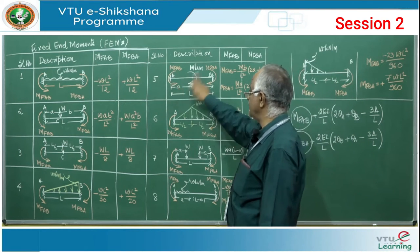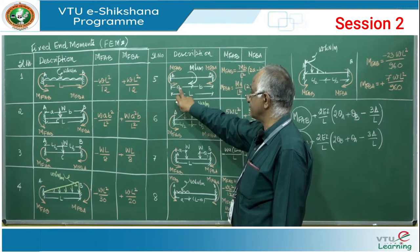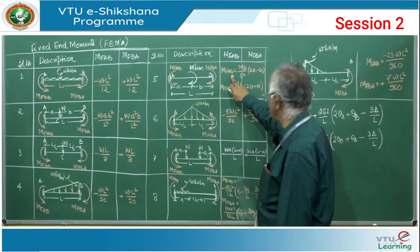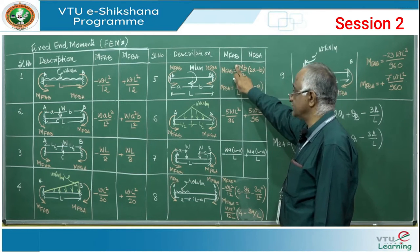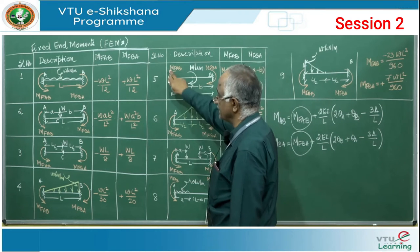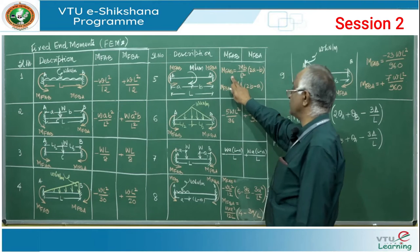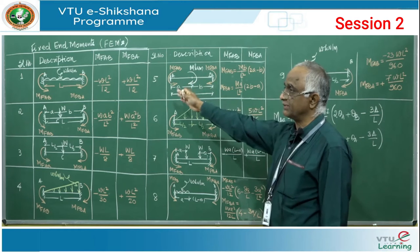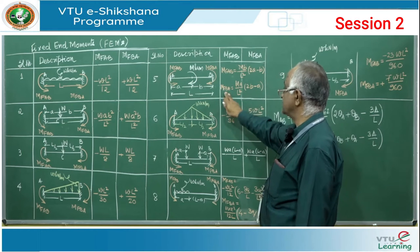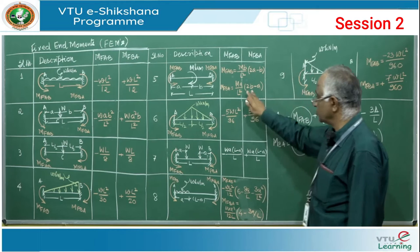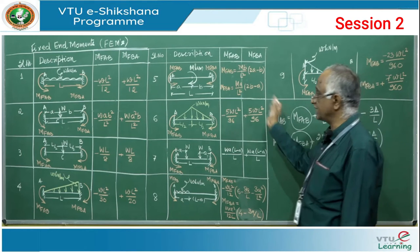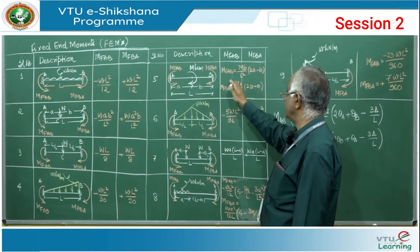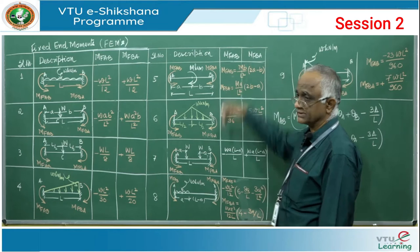For a couple M acting at distance A from left support: M_FAB equals plus MB(2A − B)/L², and M_FBA equals plus MA(2B − A)/L². Both fixed-end moment values are positive because you have a clockwise moment acting on the beam.